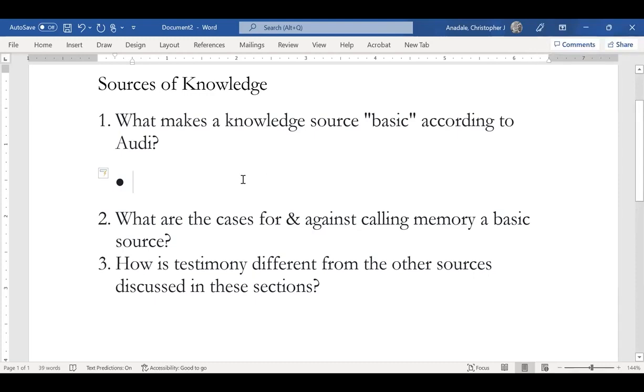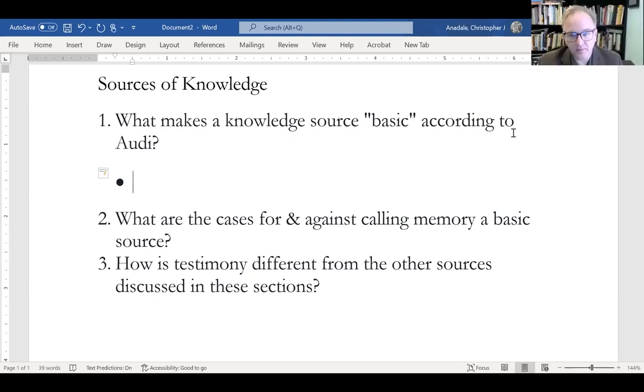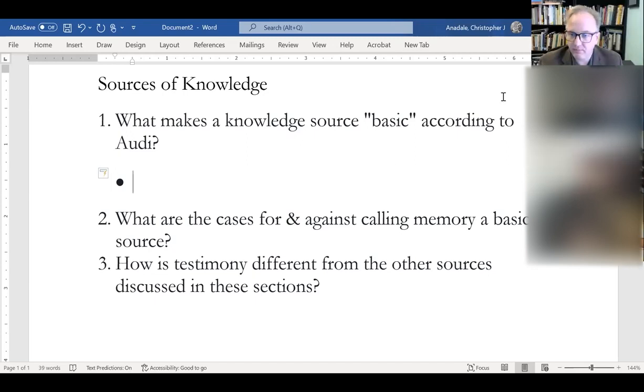The first question: Audi starts out talking about sources of knowledge and he mentions the typical ones we consider: perception, memory, consciousness or self-reflection, introspection, and reason. He has testimony as well as one that's not basic. But the first question I asked was, what is this idea of basicness when it comes to beliefs? What is it that makes a belief basic? Would anybody care to make a suggestion?